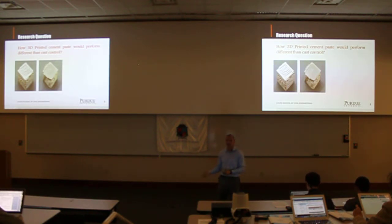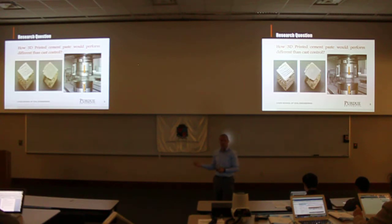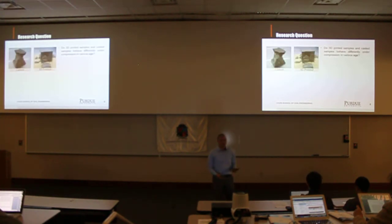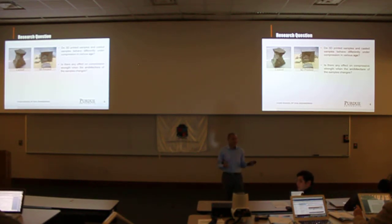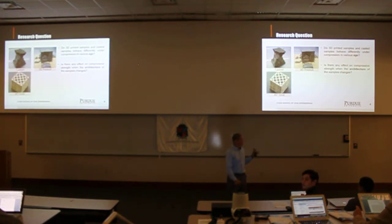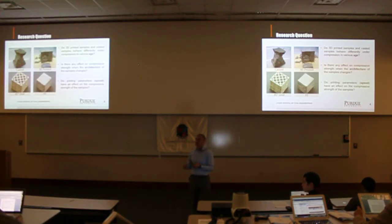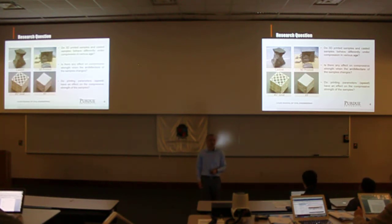That is how the 3D printed cement paste samples perform differently than cast control samples in compression behavior. You can see on your right the compressive test that we are performing. These big questions can be divided into three: how the age of the different 3D printed and casted samples affects behavior, how the architectures used affect the behavior, and finally how the different printing parameters affect these changes. At the end, everything will be summarized in a compressive strength chart.